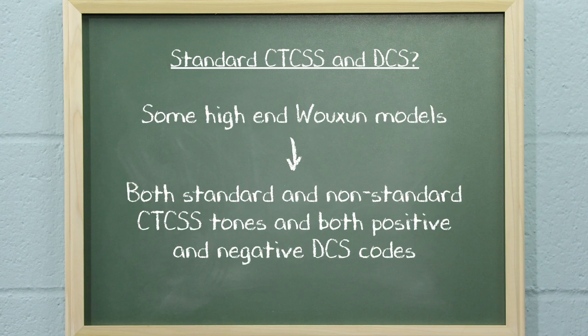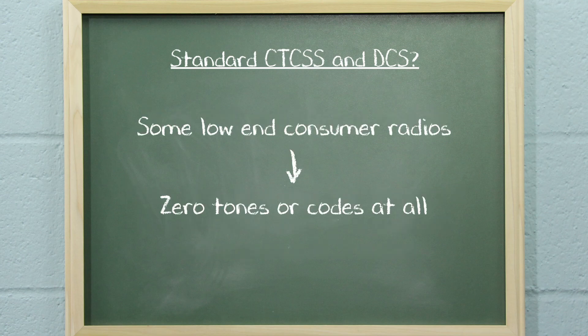For instance, some high-end OSHA models support both standard and non-standard CTCSS tones and both positive and negative DCS codes. In contrast, some lower-end consumer walkie-talkies on the market don't support any tones or codes at all. Since there is no standard, the only sure way to resolve issues with tones and codes between different radios is to consult the user manual for each model to find a common tone or code that's supported by both.